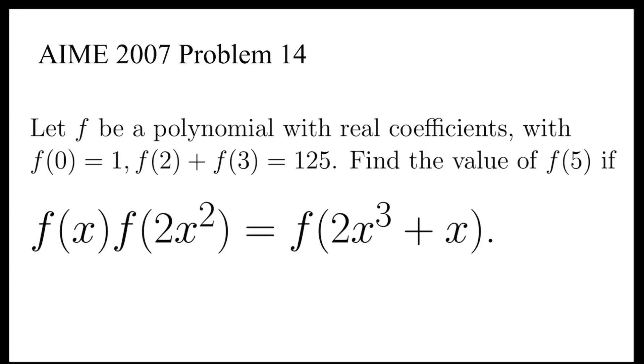Let's take a look at this problem taken from the AIME 2007. It says let f be a polynomial with real coefficients with f(0) = 1, f(2) + f(3) = 125. Find the value of f(5) if f satisfies f(x)·f(2x²) = f(2x³ + x).